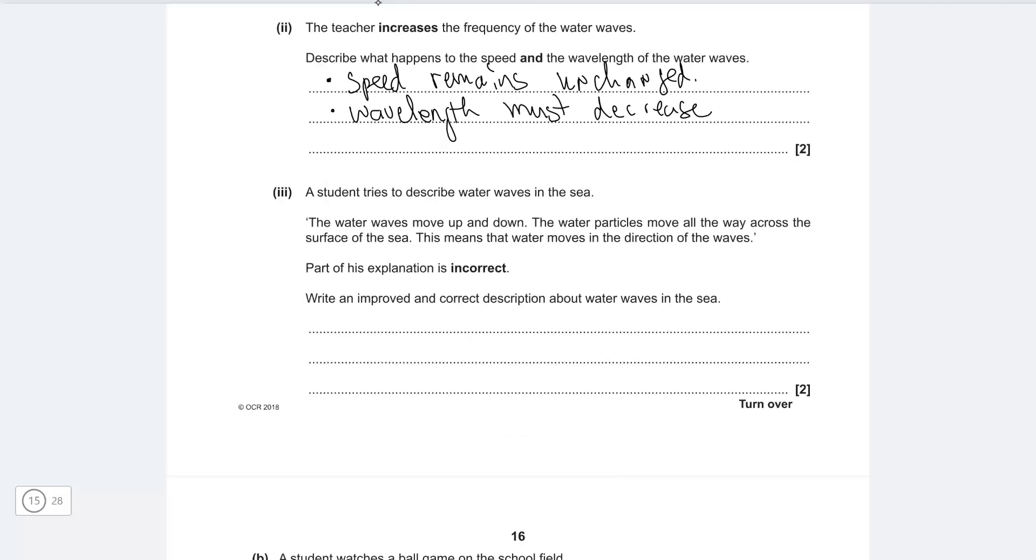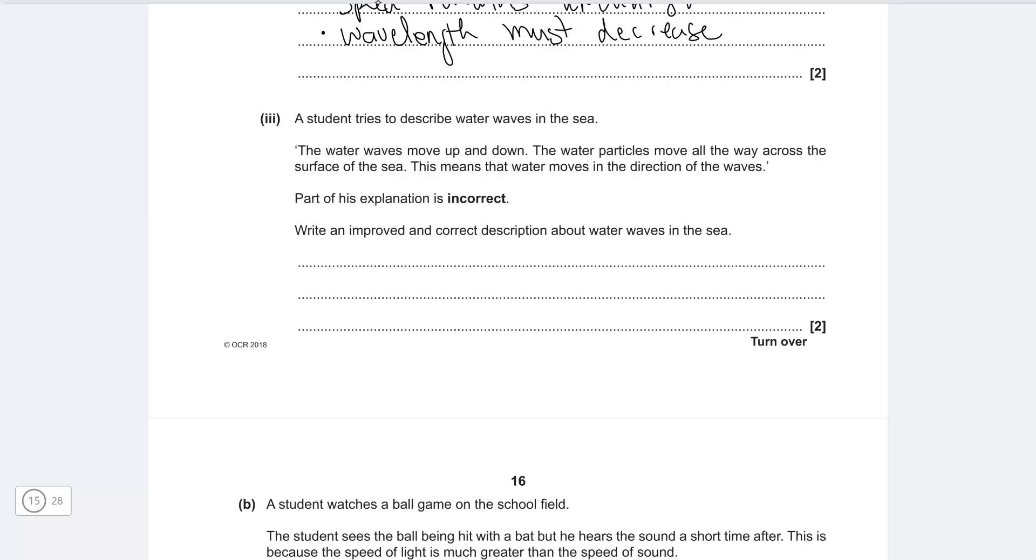Okay next one a student tries to describe water waves in the sea. The water waves move up and down the water particles move all the way across the surface of the sea this means that the water moves in the direction of the waves. Part of his explanation is incorrect write an improved and correct description about the water waves in the sea. So the first thing that I'm going to tackle is the particles move all the way across the surface of the sea that's not true so the particles will only move or will move at 90 degrees to the direction of travel or the direction of energy transfer. So we can correct that and that'll be one mark worth one mark.